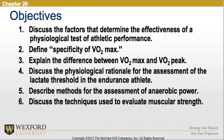The objectives of this chapter are to: 1. Discuss the factors that determine the effectiveness of a physiological test of athletic performance. 2. Define specificity of VO2max. 3. Explain the difference between VO2max and VO2peak. 4. Discuss the physiological rationale for the assessment of the lactate threshold in endurance athletes. 5. Describe methods for the assessment of anaerobic power. 6. Discuss the techniques used to evaluate muscular strength.